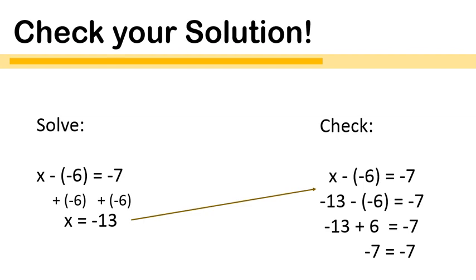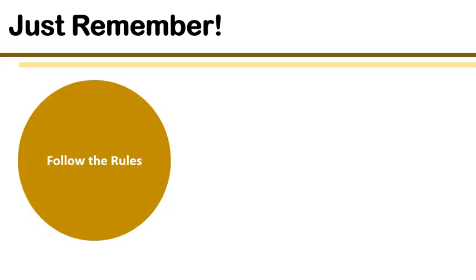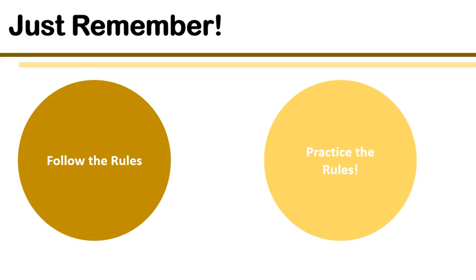I hope that you were able to get negative 13 as your final x value. That shows that you followed the steps and you should be feeling pretty comfortable with it. Just remember two things: first, follow the rules; second, practice the rules. We've done about five or six practice questions — make sure that you do some more on your own. Make sure to check your work and you'll be able to solve all the questions as you go. Hope that lesson was helpful for you. Have a wonderful day.